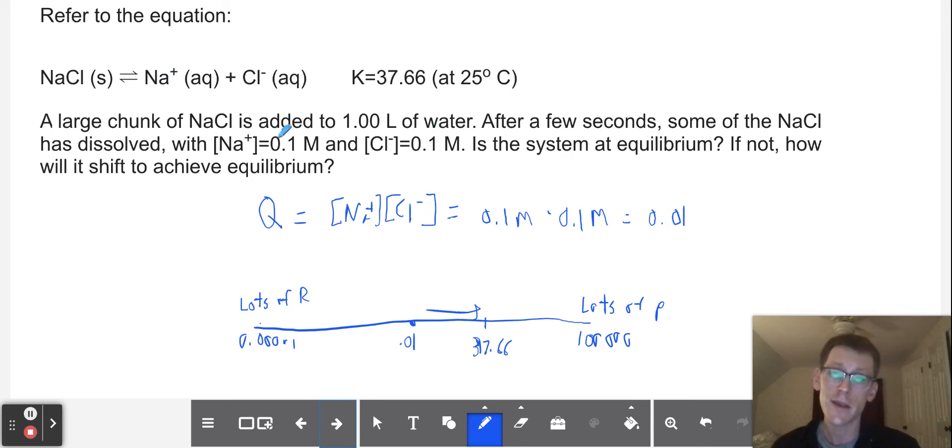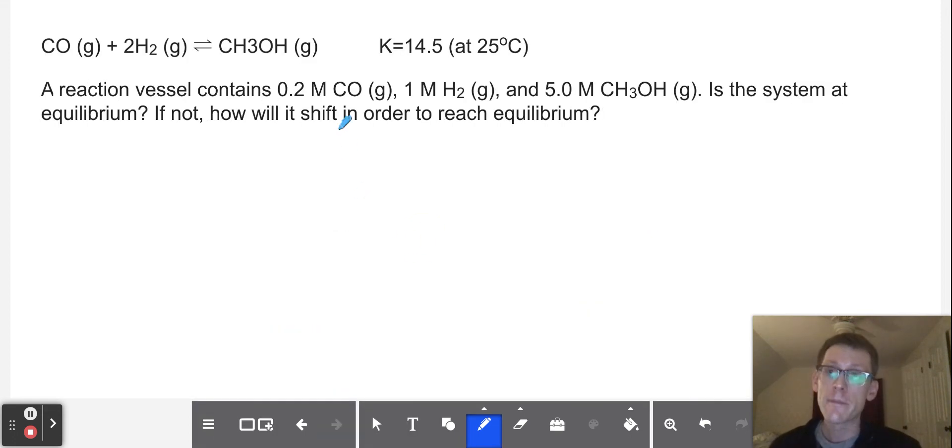And this probably makes some sense because a 0.1 molar solution of sodium chloride is not anywhere near saturated. You can keep on dissolving more and more salt to get to that equilibrium point, also known as saturation point in the case of a solubility type problem. Then I finally have one more problem, just to see a slightly different angle.